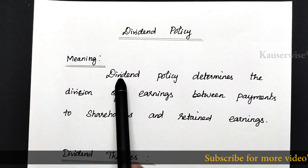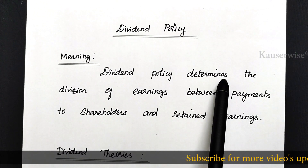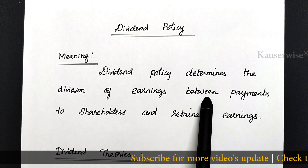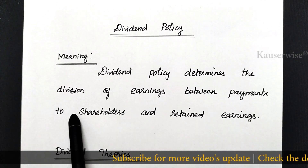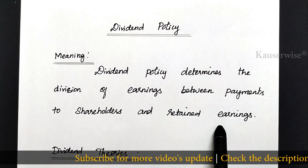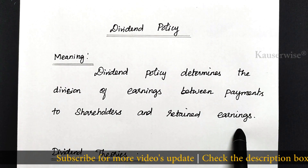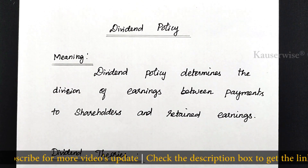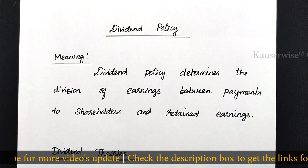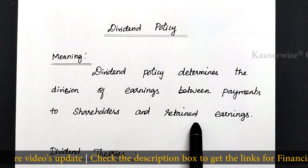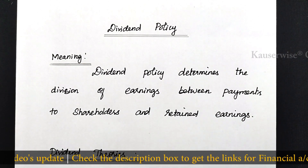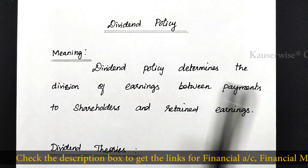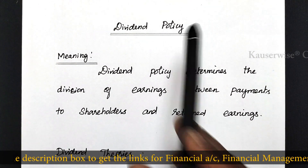The first one is meaning. Dividend policy determines the division of earnings between payments to shareholders and retained earnings. The decision is whether to distribute the entire profit to shareholders or to retain some proportion — that division decision is called dividend policy.